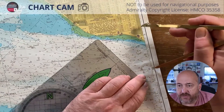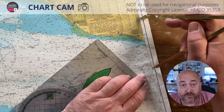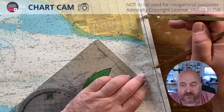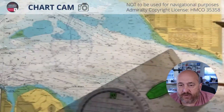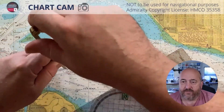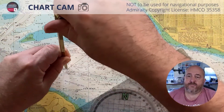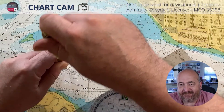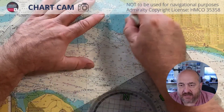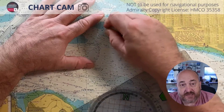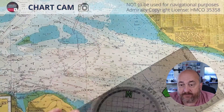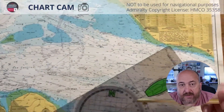1.5 nautical miles is the distance we will have travelled in a quarter of an hour at 6 knots. So we plot that onto our water track. That's our boat vector — the distance travelled over 15 minutes on a course which is allowing for leeway.